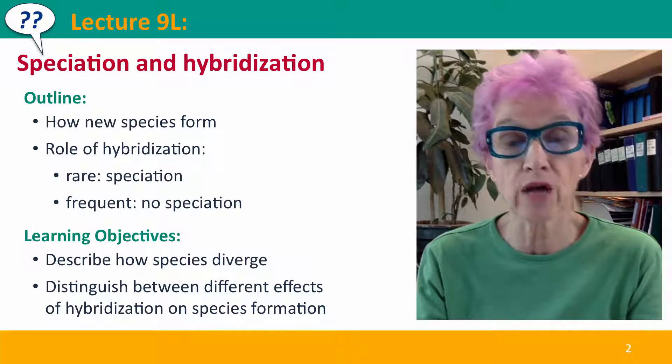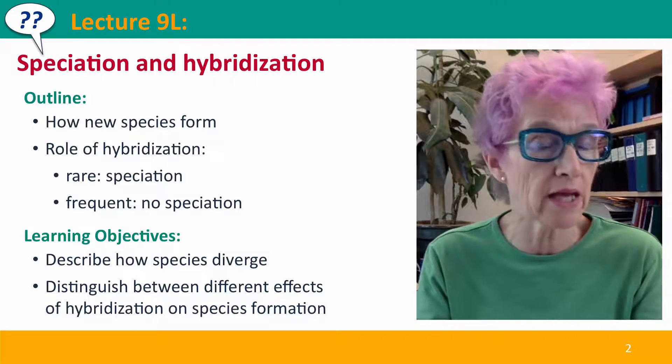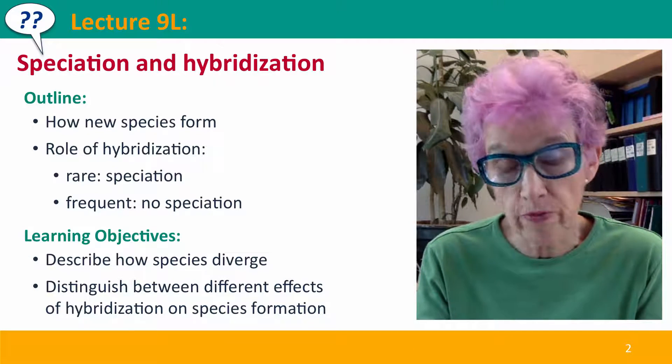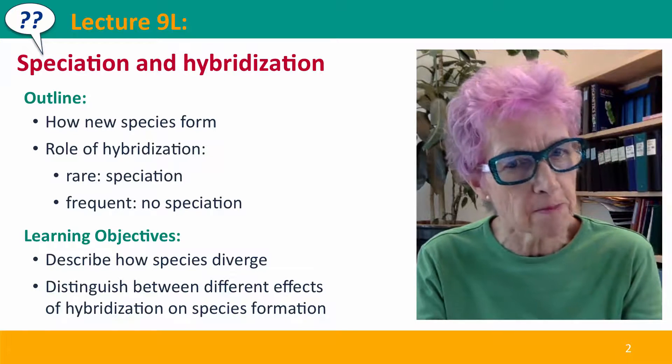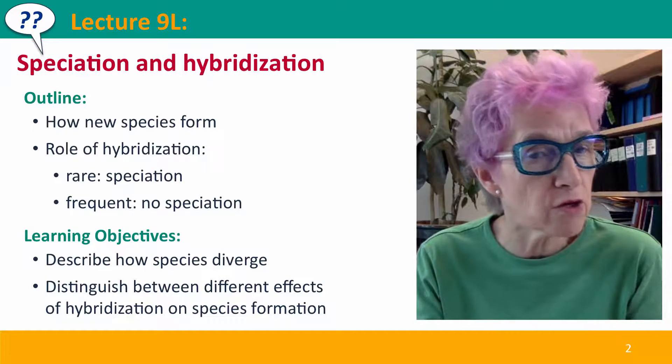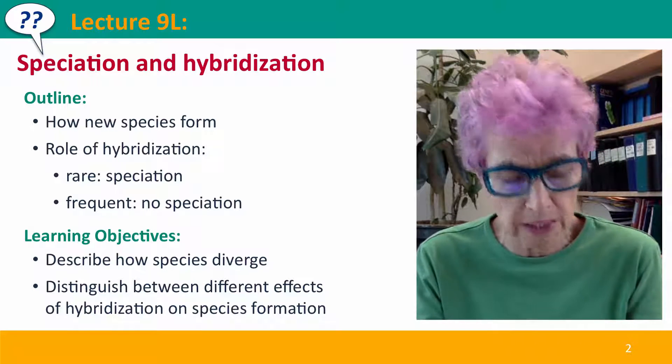Hi, everyone. Welcome to Lecture 9L of Useful Genetics, where we're going to talk about speciation and hybridization. We'll talk about how new species form. First, we'll define what a species is, and we'll talk about how hybridization can either make it easier for new species to form or can prevent formation of new species.